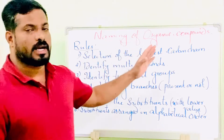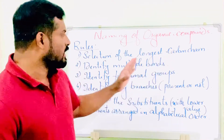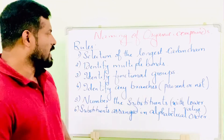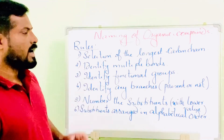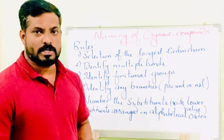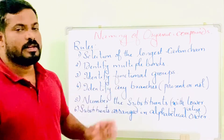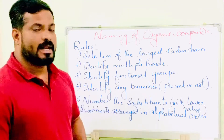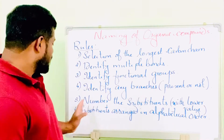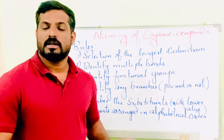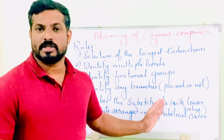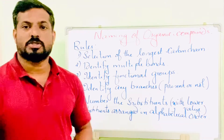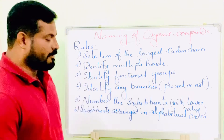To summarize the rules for naming organic compounds: rule one — select the longest carbon chain; rule two — identify any multiple bonds present; rule three — identify the presence of a functional group; rule four — identify any branches present; rule five — while numbering, substituents must possess the lowest number; and rule six — substituents are arranged in alphabetical order.